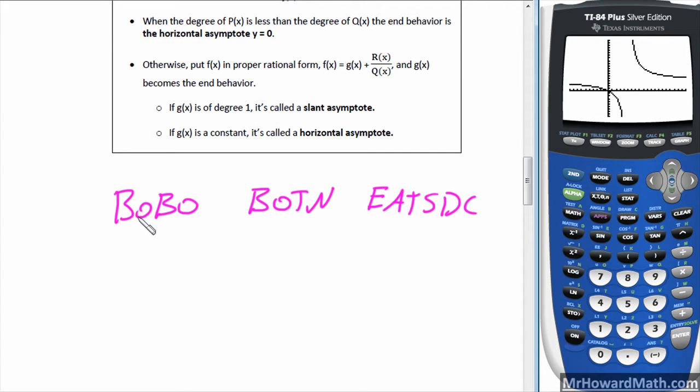So this stands for this: bigger on bottom, our horizontal asymptote is y equals 0. Bigger on bottom, B-O-B, this y-intercept is 0. So bigger on bottom, our horizontal is y equals 0. Bigger on top is what this stands for. We have none. We have no horizontal, but likely a slant. Likely have a slant, and we have to do long division to test that. And Eats DC, this stands for exponents are the same. Then we divide their coefficients to get the horizontal asymptote.